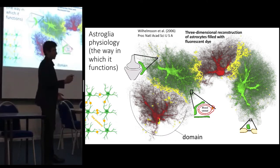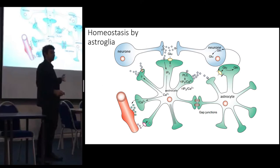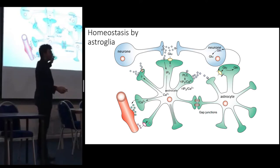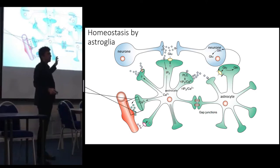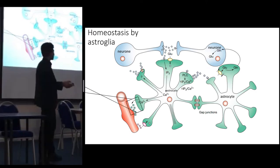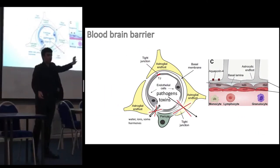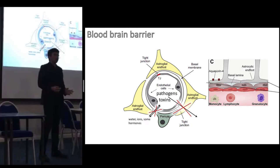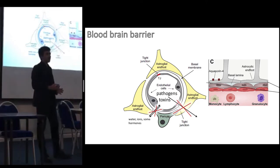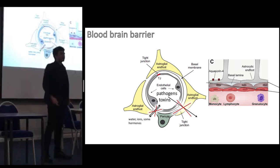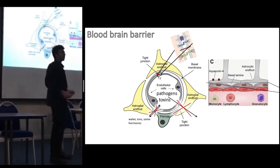Let's focus on the astrocyte endfeet contacting the blood vessel. If we zoom in on the image, we'll see the blood-brain barrier. The astrocyte endfeet tightly wrap around the endothelial cells, and in turn the endothelial cells tightly wrap around the bloodstream. Factors released by astroglia cause these endothelial cells to be tightly bound by proteins, forming tight junctions.